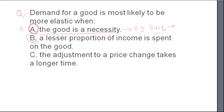Now we will see option B. Option B is: a lesser proportion of income is spent on the good. For example, again we can take the example of salt. If a monthly spending of a family is Rs. 4000 on groceries and out of this 4000, if the family's spending is Rs. 10 on salt, and if the salt price increases to Rs. 12...